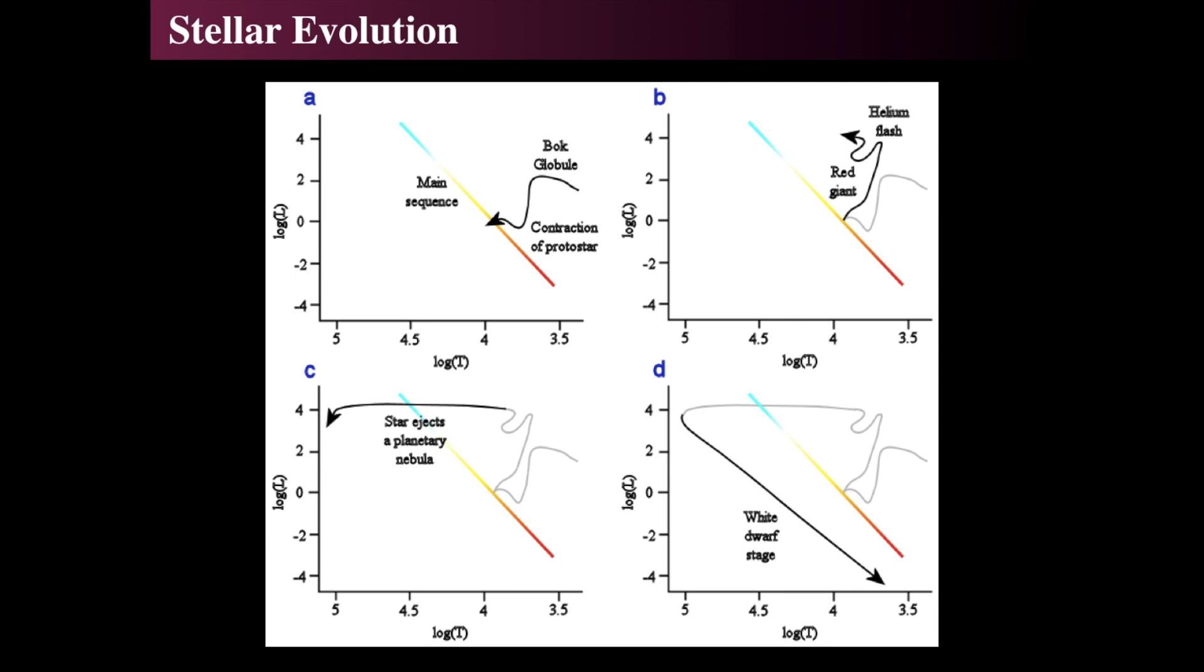And every star follows an evolutionary track over its lifespan. The sum of all the stars in their current places in their evolutionary track makes up an HR diagram for a cluster. And so these models and tracks are computer models because we've never seen and will never see an individual star do this. We're just taking snapshots and knowing the physics of them.